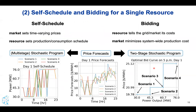With these forecasts, a resource can either self-schedule or bid. In the self-scheduling paradigm, the resource uses these forecasts and asks how it should operate to get the best revenue under uncertainty, then just takes the market price. This can be formulated as a multi-stage stochastic program. In contrast, in bidding, the resource actually tells the grid about its cost through a bid curve showing power versus price — how much power a generator is willing to produce as price changes. This can be calculated with a two-stage stochastic program.